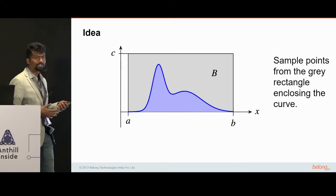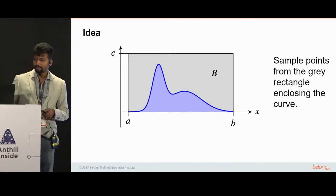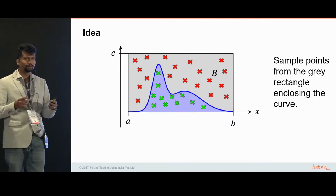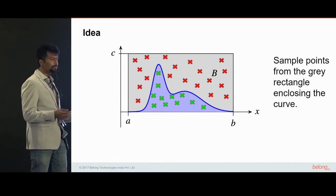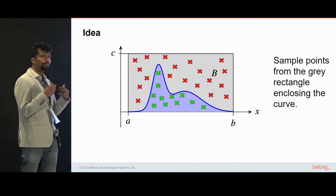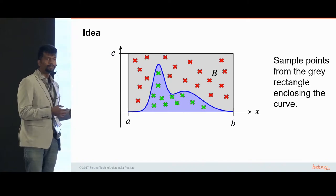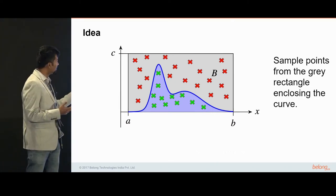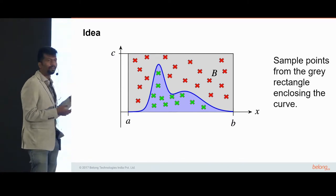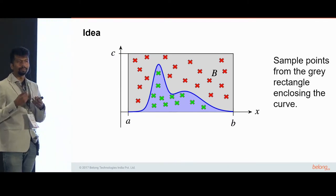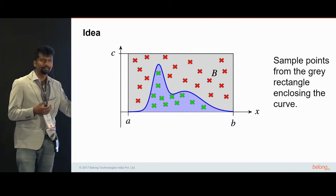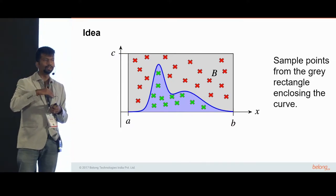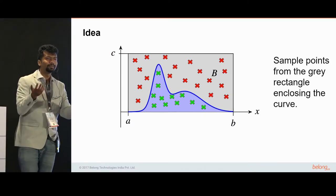Then what you do is randomly sample points from the rectangle. You use a uniform random distribution to find points within the rectangle. Some points are going to lie within the curve and some outside. You can tell which points lie within the curve by taking the x value, applying f(x), and seeing if the y that you randomly sampled is less than f(x). That means the point lies within the curve; otherwise it lies outside.